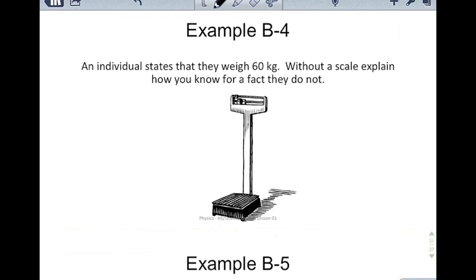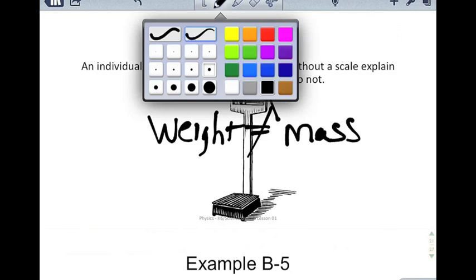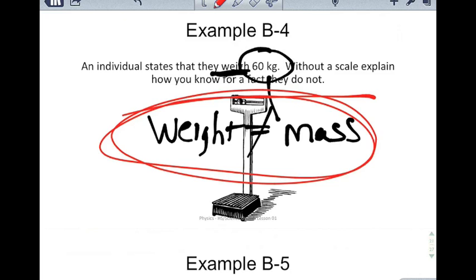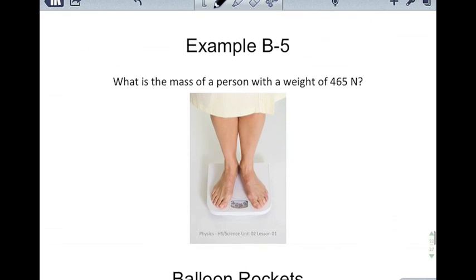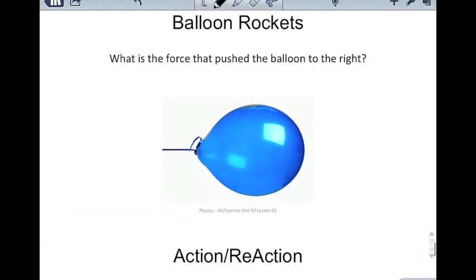An individual states that they weigh 60 kilograms. Without a scale, explain how you know for a fact that they do not. The reason is that 60 kilograms is a unit of mass, not weight — weight does not equal mass. They are not the same thing. What is the mass of a person with a weight of 465 Newtons? Using F = MA, plug in the force of 465 Newtons and the acceleration due to gravity, g = 9.8 meters per second squared, to solve for mass.